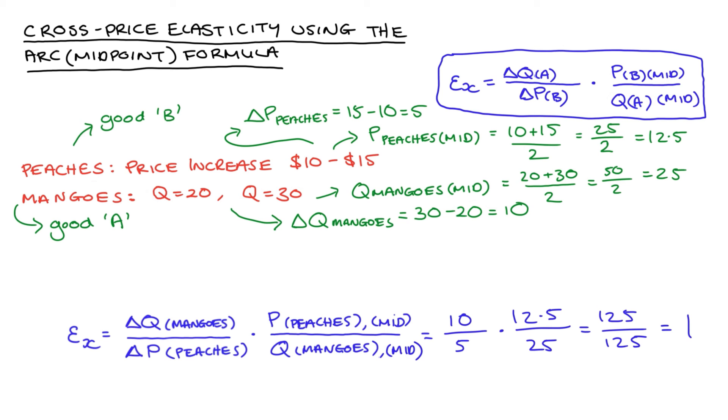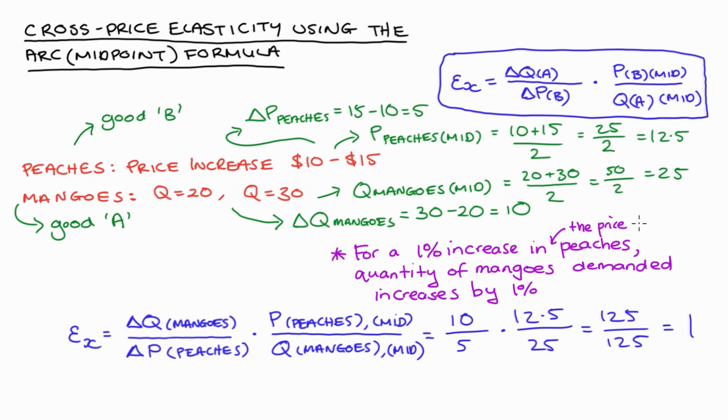And we can actually interpret this as for a 1% increase in the price of peaches, the quantity of mangoes demanded increases by 1%. Now this value actually indicates that peaches and mangoes are what we call substitutes because it's positive, and a positive cross-price elasticity indicates that our goods are substitutes.